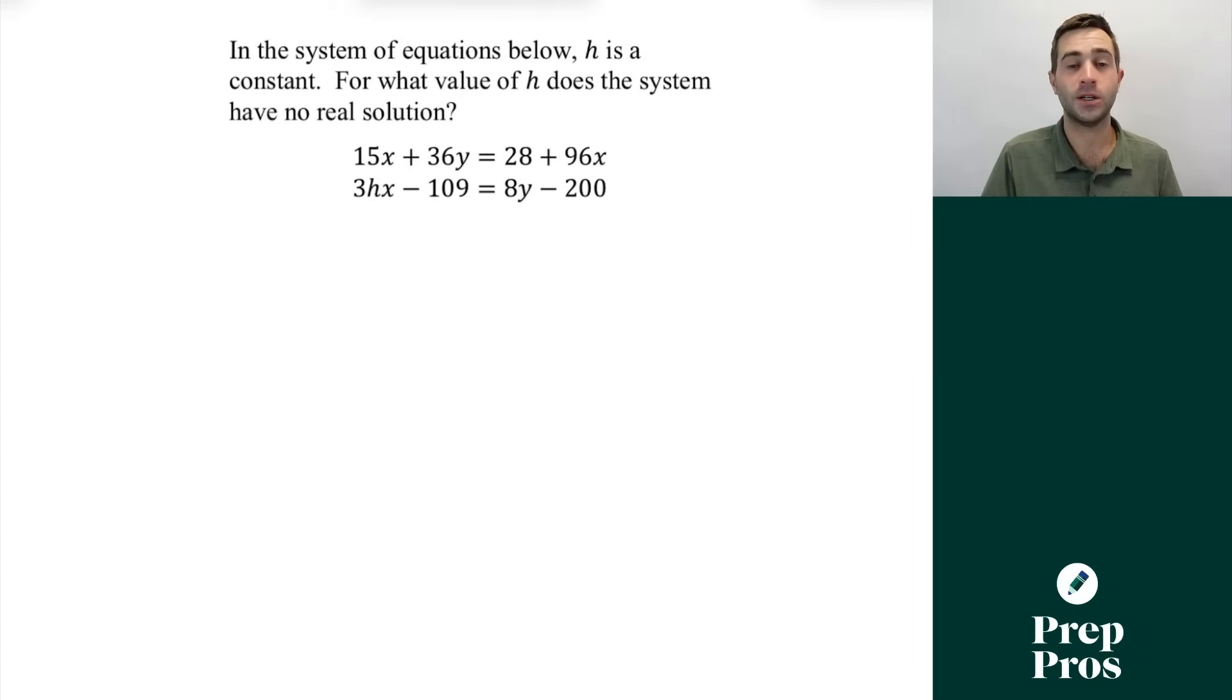Now the next thing you're going to see on your SAT are questions asking about no solution or infinite solutions. And here if we see in the system of equations below h is a constant, for what value of h does the system have no real solution? Well, we're looking at linear expressions here. There's no x squared term. So what we need to understand is if we have no real solution, that means we have parallel lines with different y-intercepts because they're never going to intersect each other. They're never going to have a solution.